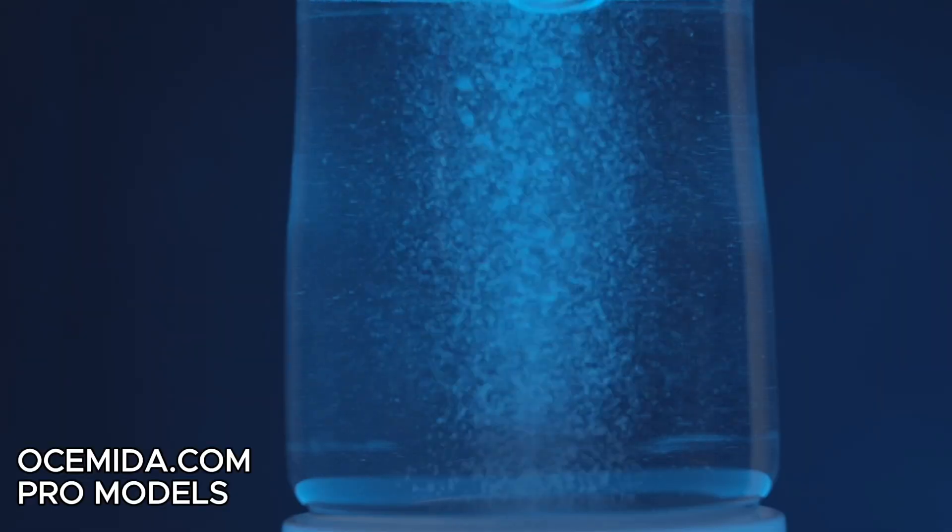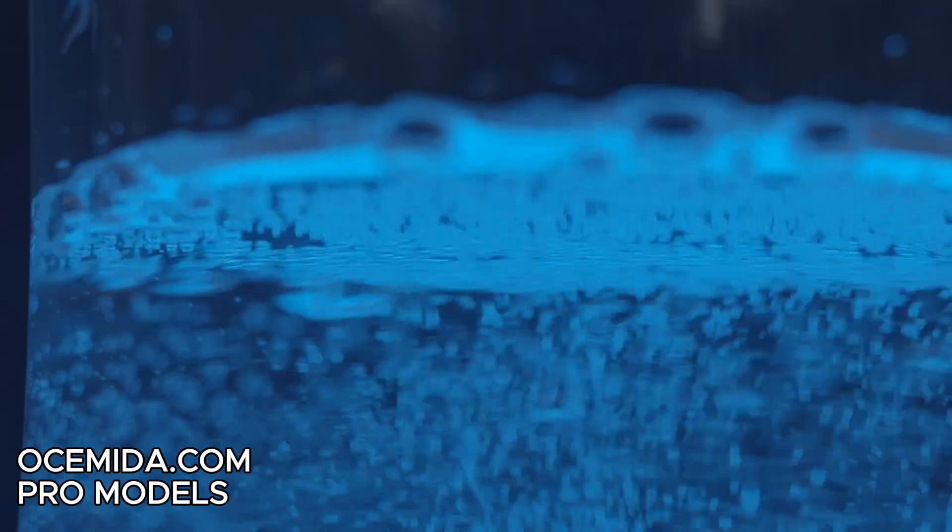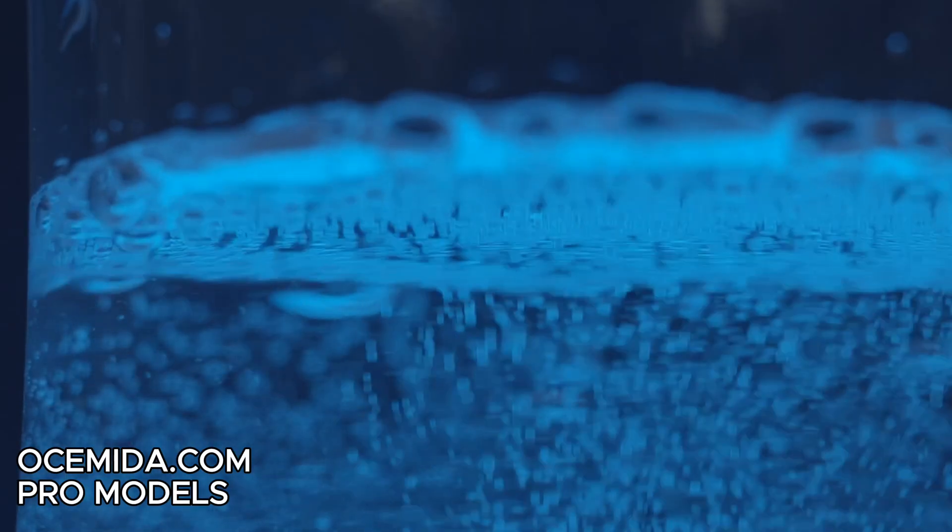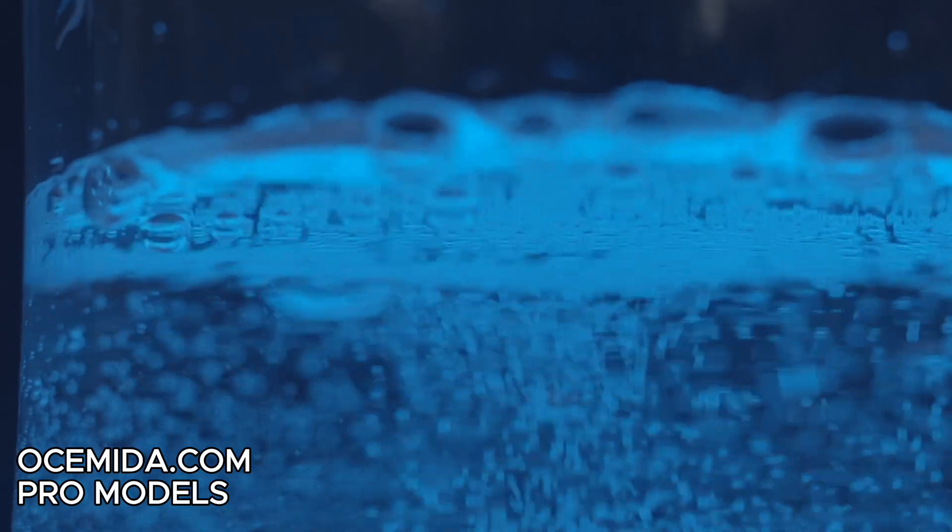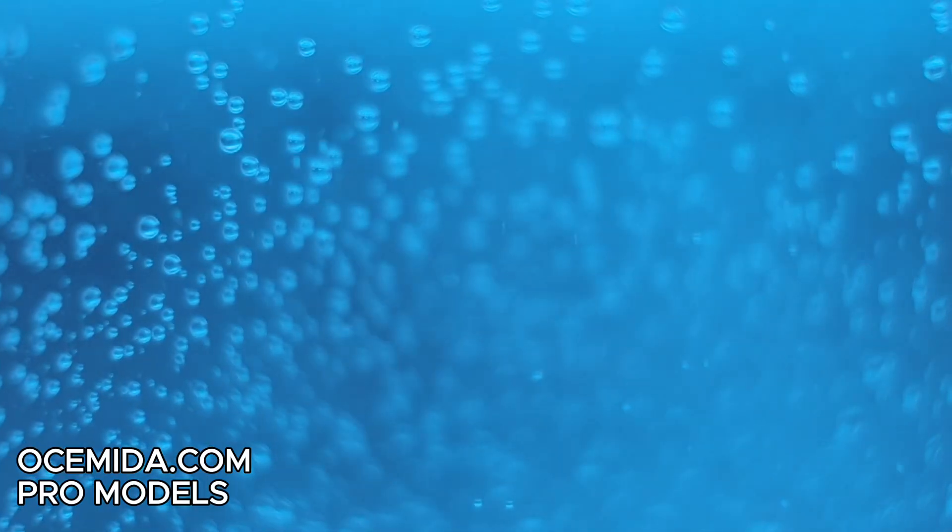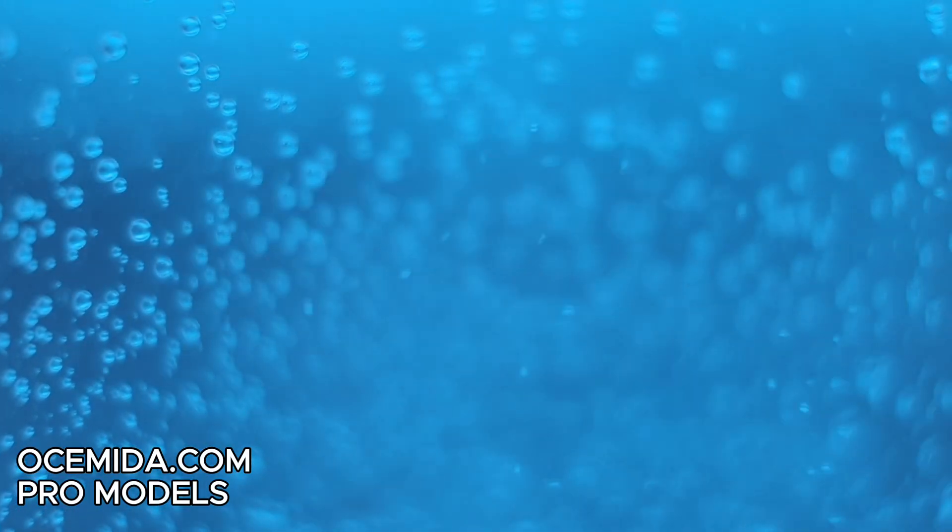The Oshimita Pro models address this limitation through precise engineering. Our device can generate high concentrations of hydrogen in distilled water by implementing an advanced electrolysis mechanism that doesn't rely on pre-existing water conductivity.